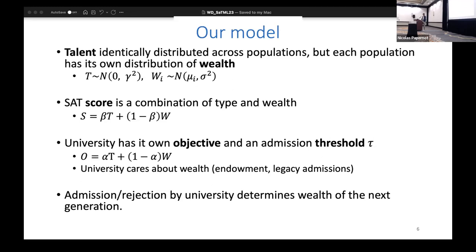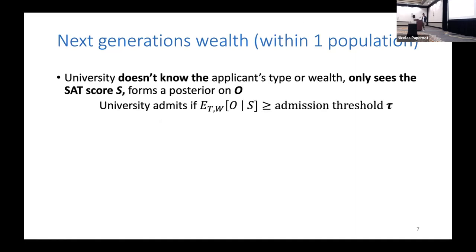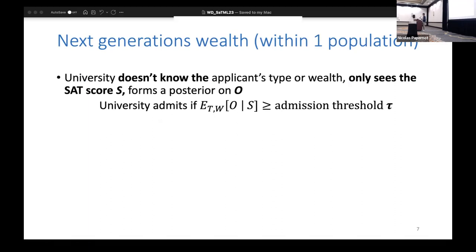Let me quantify this last point in the next slide. We make two modeling assumptions here for how the next generation's wealth evolves, all within one population. The university doesn't know the type or wealth - this is a natural assumption; you only get to see a SAT score.